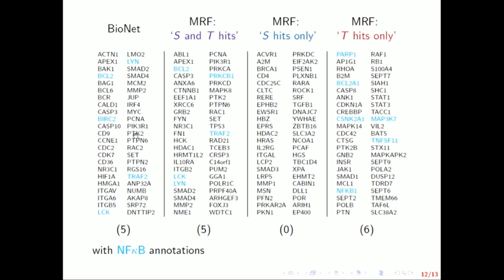If we look at where these annotations are, there was some in Bionet, and we also found some with the S and T hits, so look at a Venn diagram in a second. And then what was particularly interesting was we didn't actually find any of this NF-kappa-B annotation when you were just looking at S hits only, which is interesting because then if you look at T hits only, you find a bunch more.